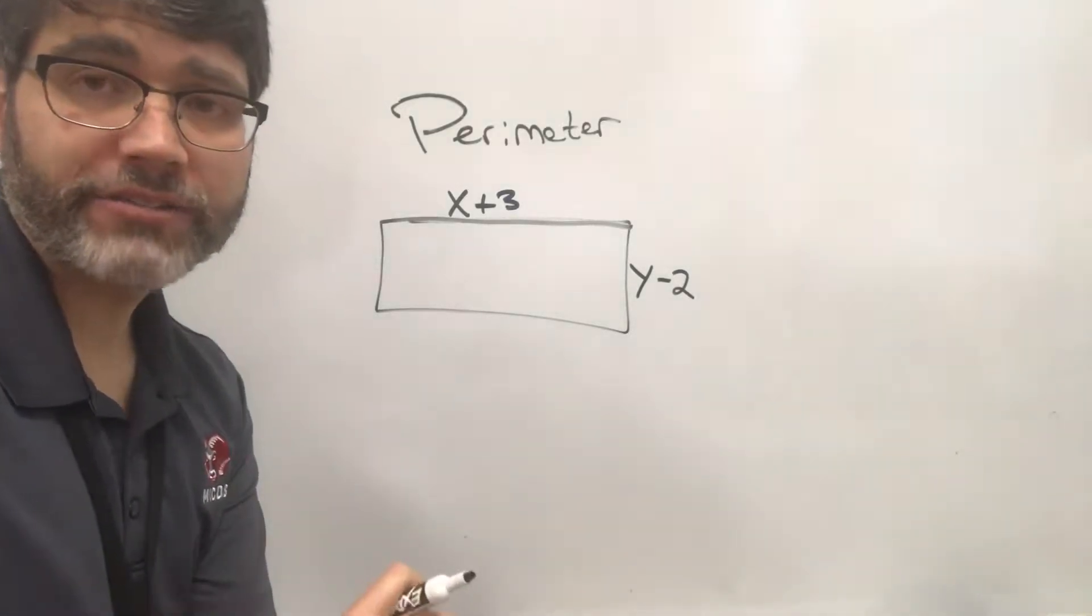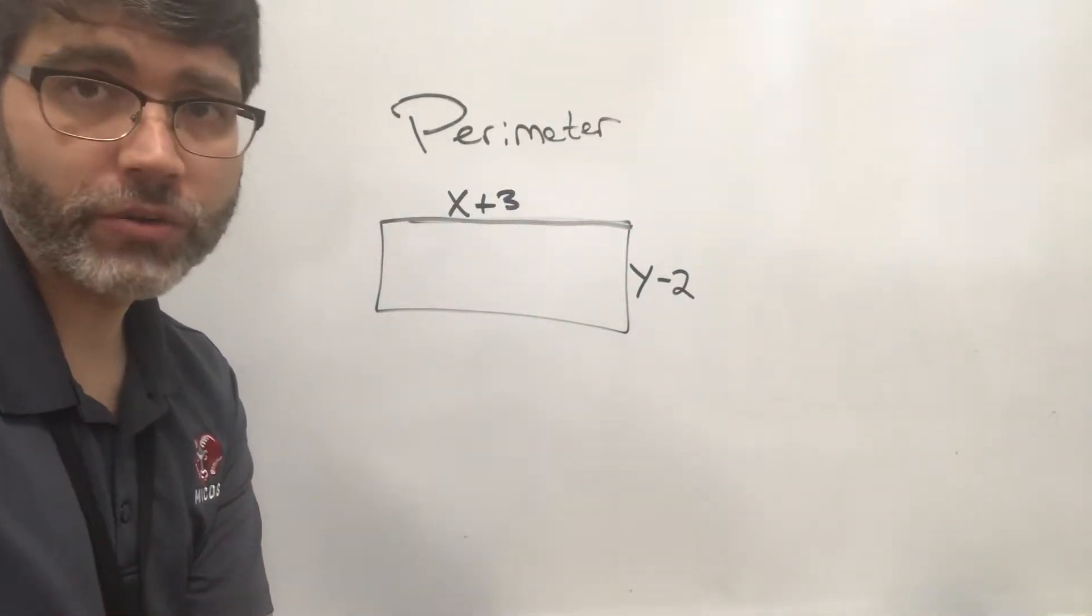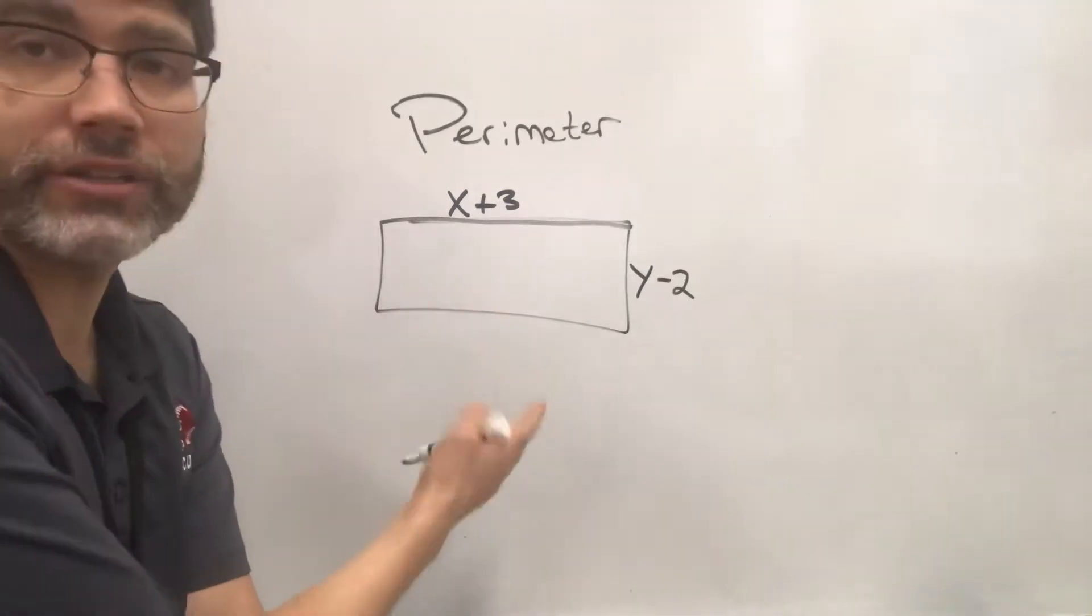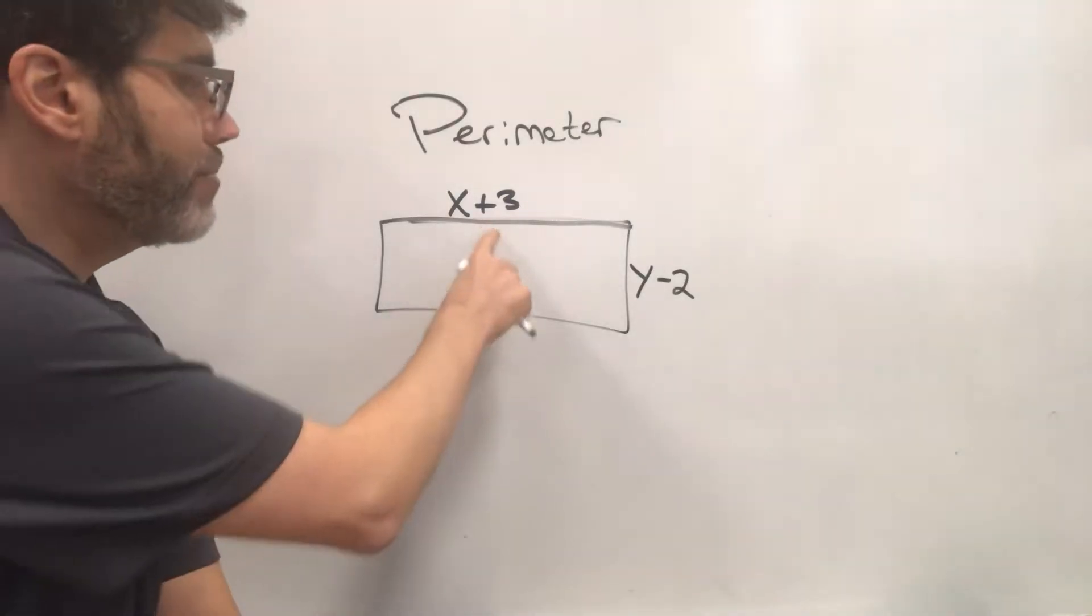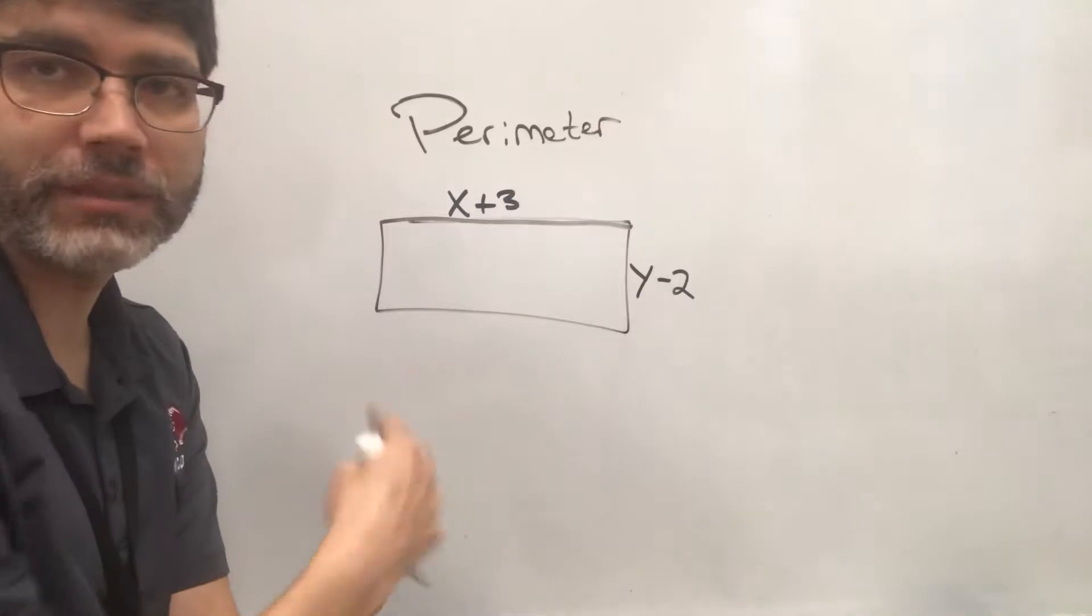So in this video, I'd like to talk about how to find perimeter of a shape. So here we have a rectangle, and if we're told that it's a rectangle, then we know that the opposite sides are going to be the same length as well.